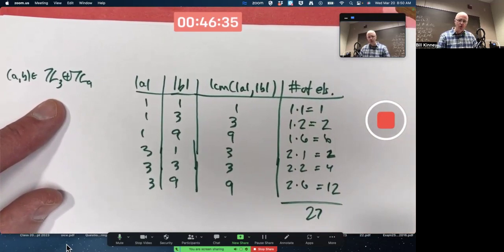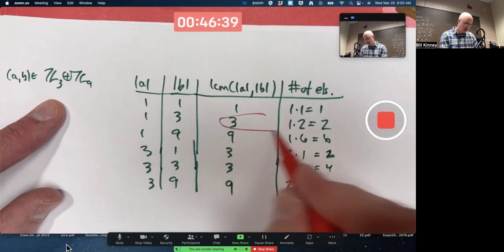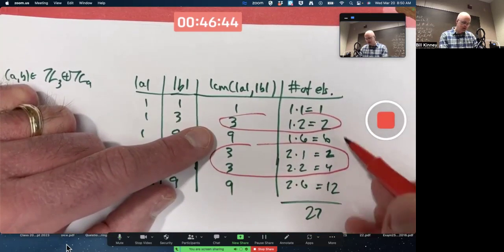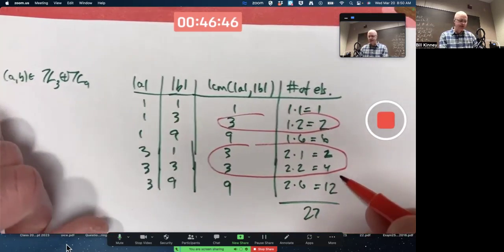How many elements in this group have order three? It would come from this row and these two rows, because they have the LCM equal to three. Two plus two plus four, there's eight elements of order three.